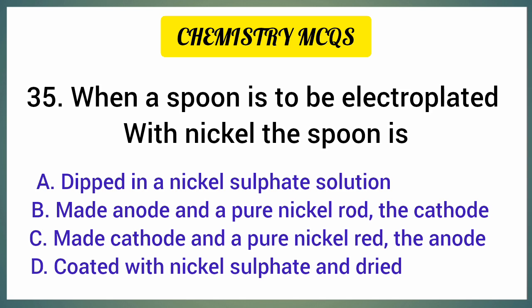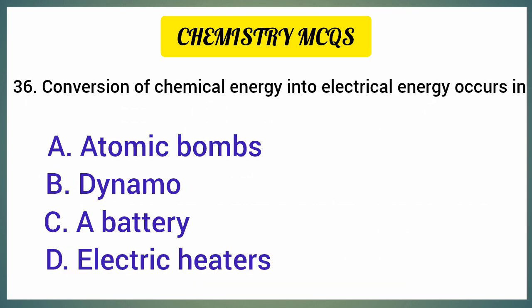When a spoon is to be electroplated with nickel, the spoon is — correct option is option C. Conversion of chemical energy into electrical energy occurs in — correct option is option C: A battery.